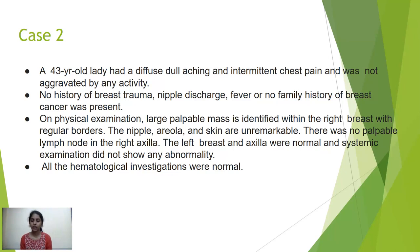On physical examination, a large palpable mass was identified within the right breast with irregular borders. The nipple-areola complex and skin were unremarkable. There was no palpable lymph node in the right axilla. The left breast and axilla were normal and systemic examination did not show any abnormality. All hematological investigations were normal.